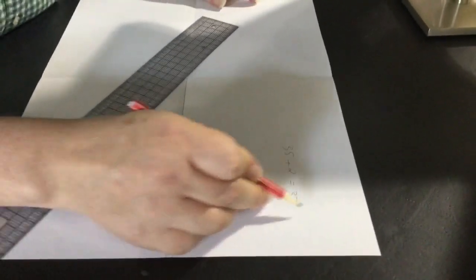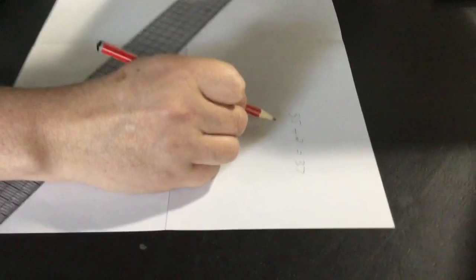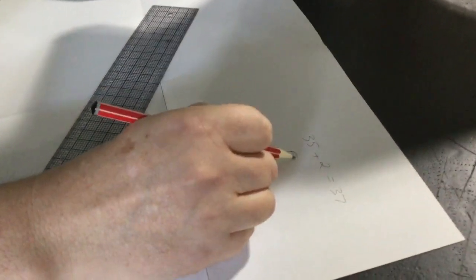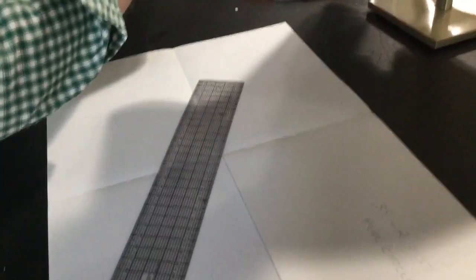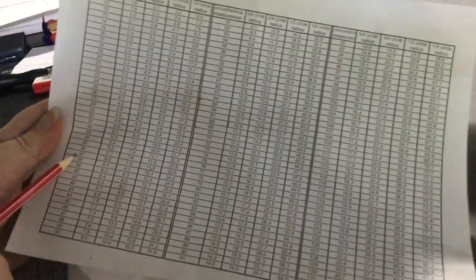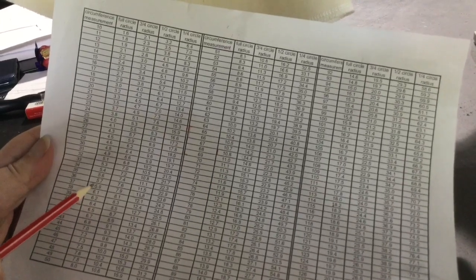So 37 is our total waist measurement and we want to do a full circle. So again we go to our chart and we've got here down to our 37 centimeter waist measurement and we go across to a full circle.